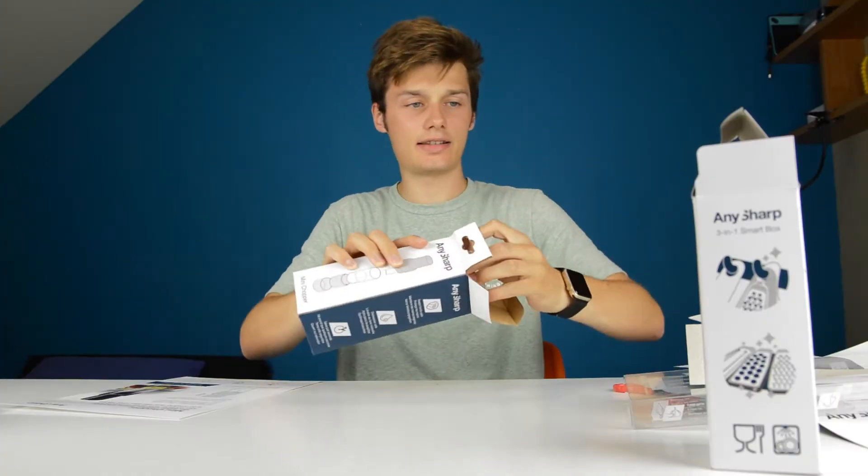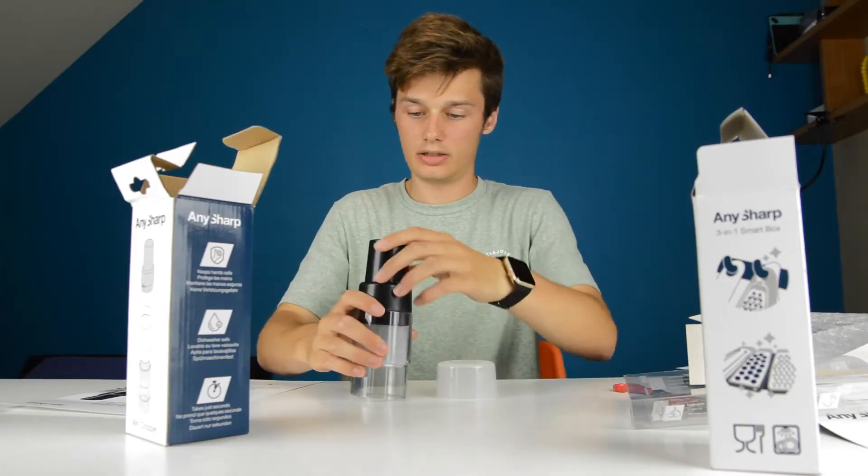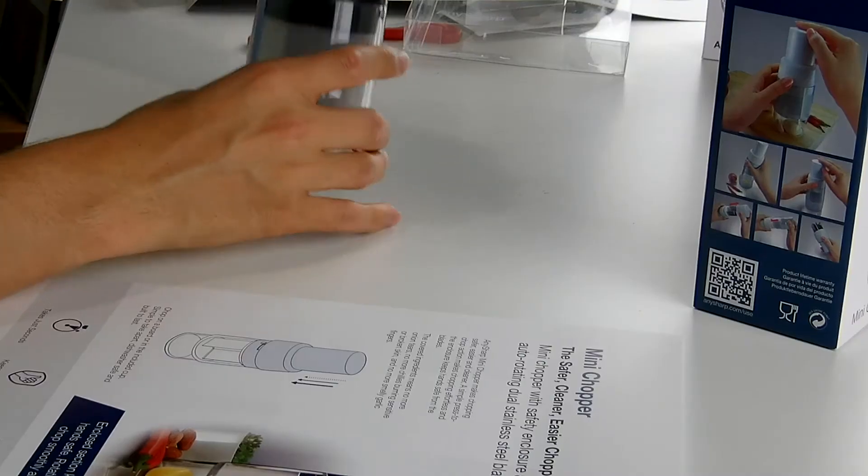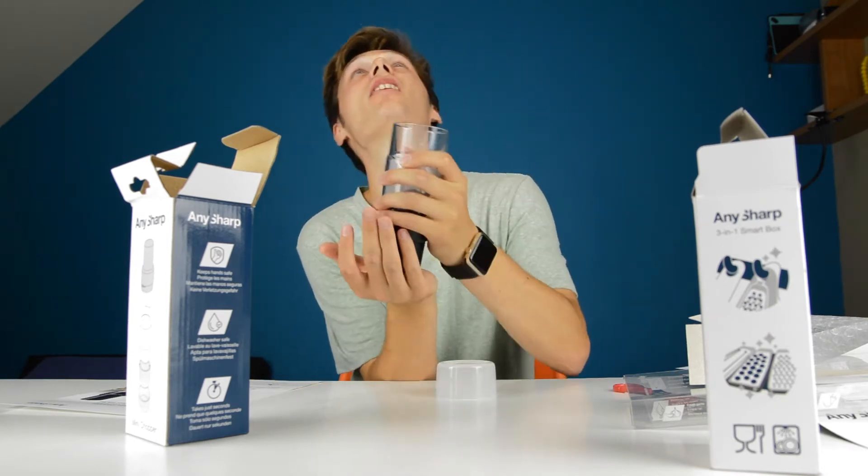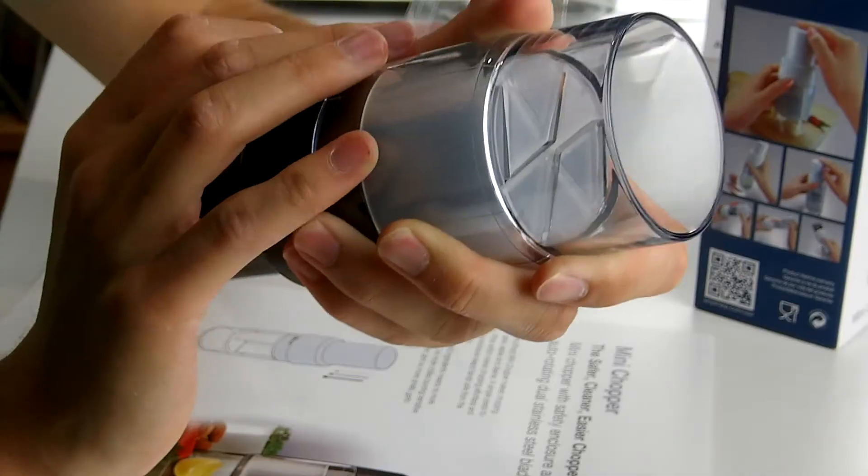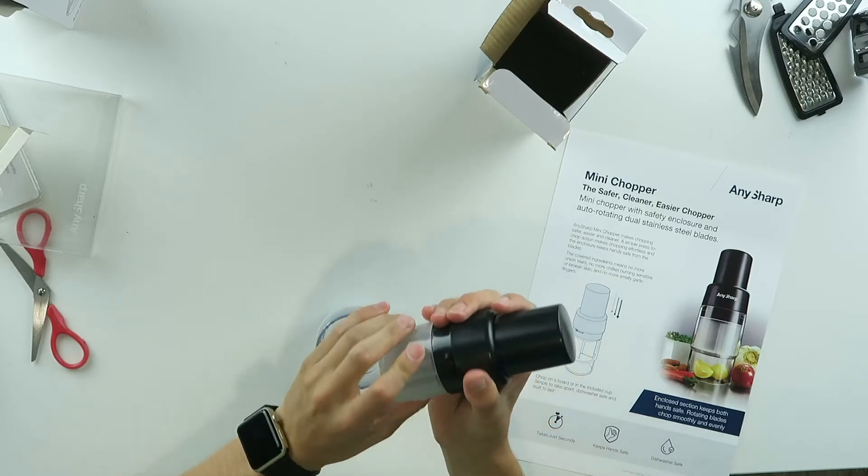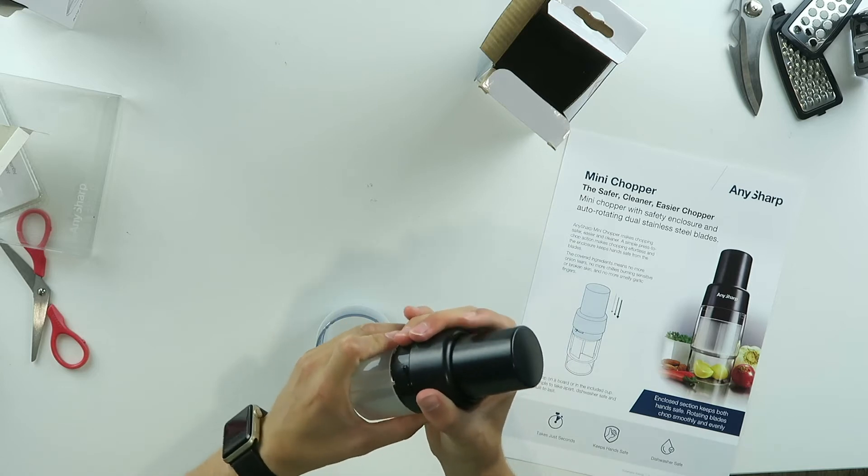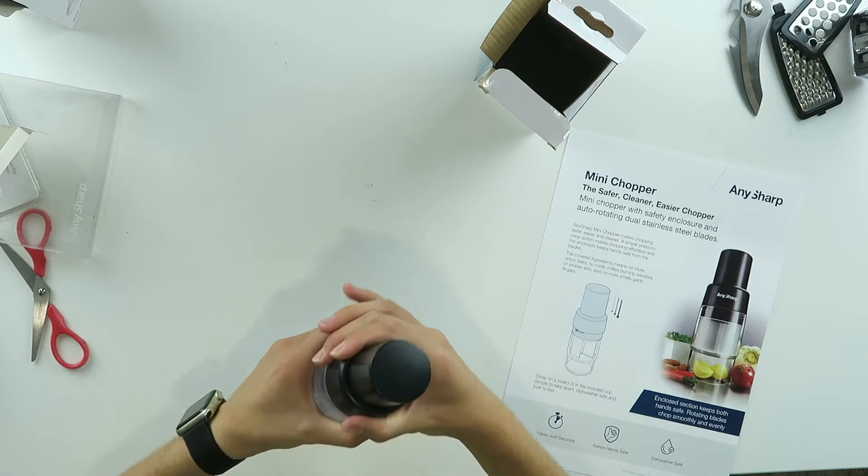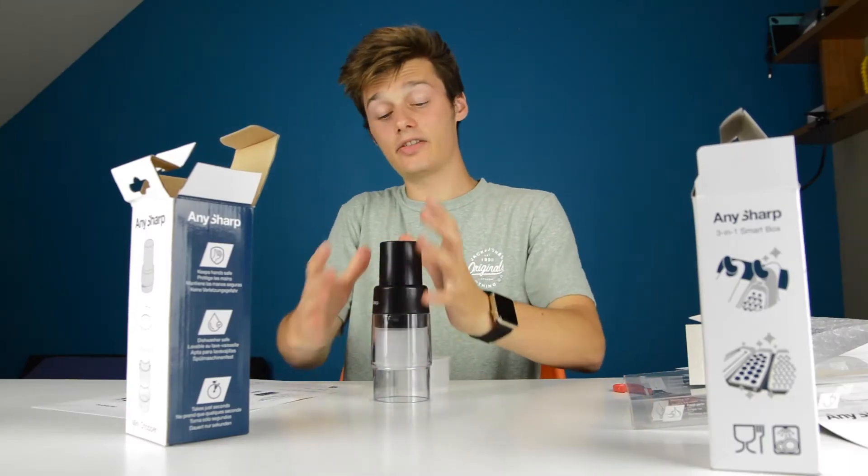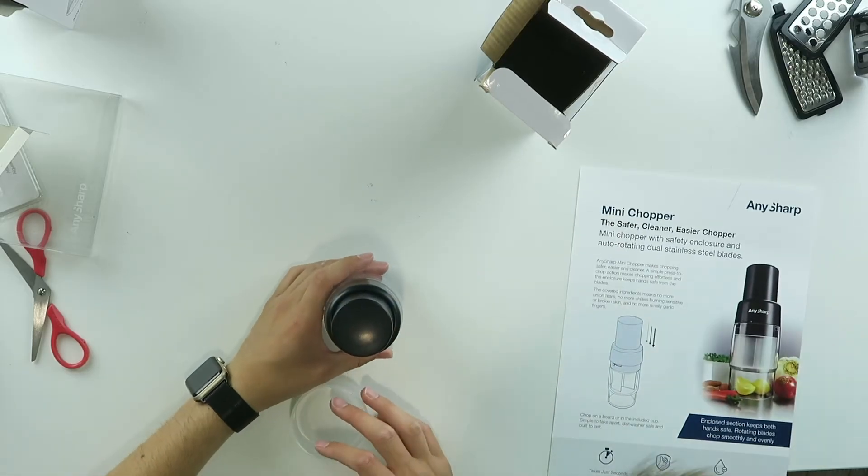Same packaging as the 3-in-1 smart box. This actually looks pretty neat. Oh, that's sharp. That is sharp. Just look at this. It can be dangerous if you use it the wrong way. You can take these out of course if you want to wash them probably. I'm going to destroy it, I'm just going to put it back in like this. So it keeps your hands safe because it's an enclosed environment. You can take it apart for the dishwasher as well.